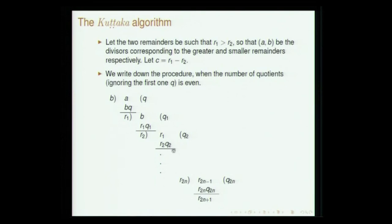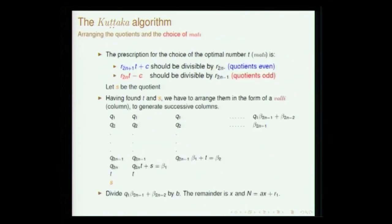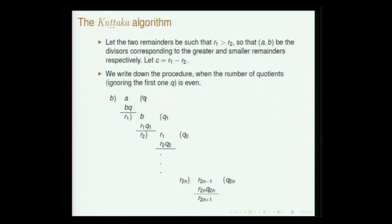This is just the division process where all quotients are obtained. You have to leave the first quotient when counting. The prescription is: c has to be added when the number of quotients is even, and c has to be subtracted when quotients are odd. One should not commit the mistake of counting the initial division of a by b — that should be left out.